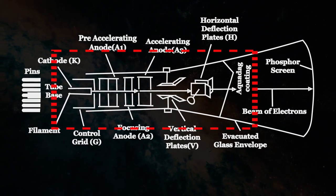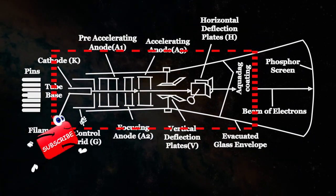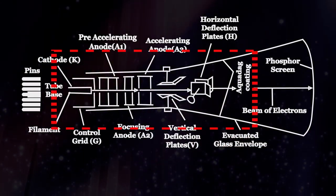After the electrons pass through the control grid, they are focused into a tight beam and accelerated to a higher velocity by the focusing and accelerating anodes.